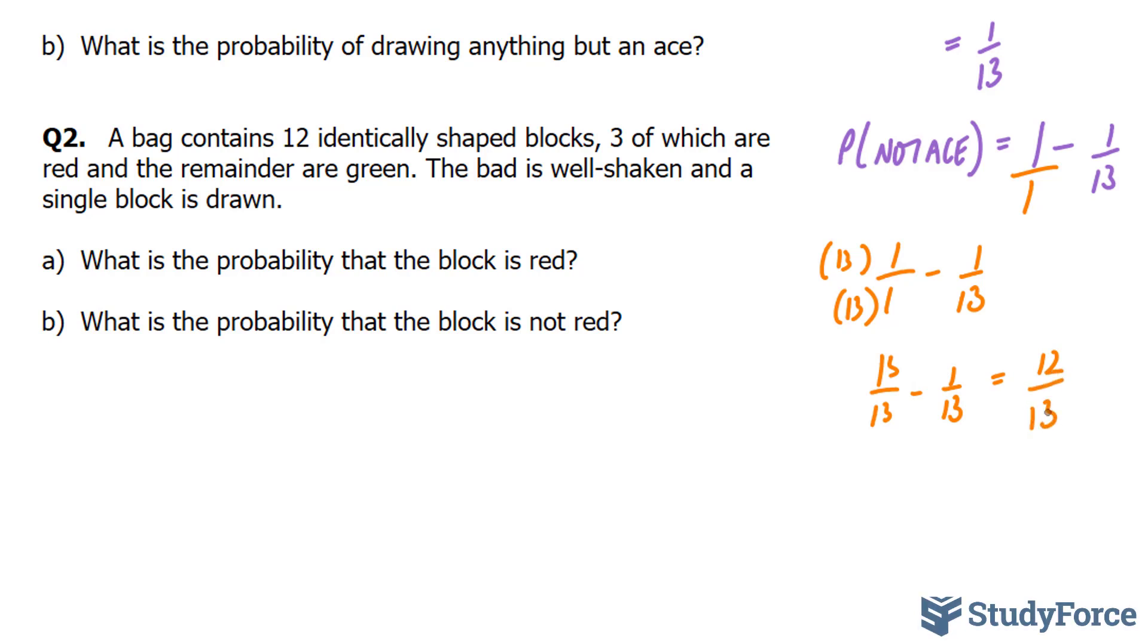So there is a 12 over 13 chance that you will not select an ace from a fresh deck of cards. Now, of course, you could have done this in a different way. You could have said, well, there are 4 aces in a deck, therefore there are 48 other numbers that are not aces. So you could have simply reduced 48 over 52, and that would have led you to that as well. Moving on to question 2,